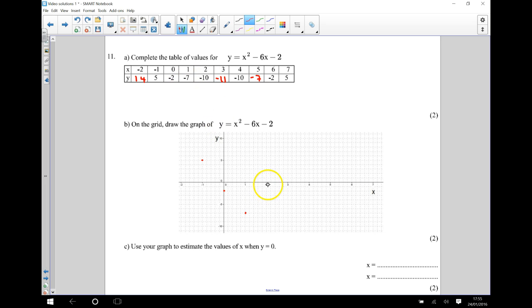2, negative 10, which is going to be here. 3, negative 11, which is there. 4, negative 10. 5, negative 7.